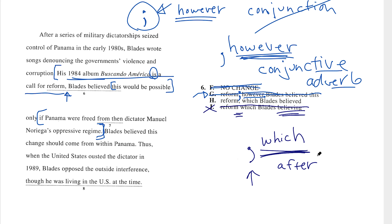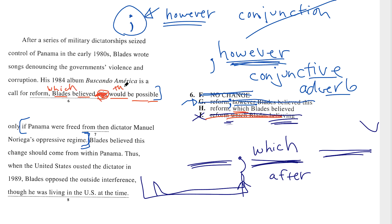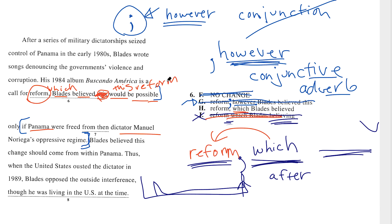Which usually refers to what comes right before the comma. Let's see if H works: 'His 1984 album is a call for reform, which Blades believed would be possible only if Panama were freed from the dictator.' That makes a ton of sense. 'Which' refers to what it touches — here that's the word 'reform.' You can move the word order around and reinsert it in the sentence to see if it works. And if it does, your relative pronoun is probably the one to go with. Our answer is H.